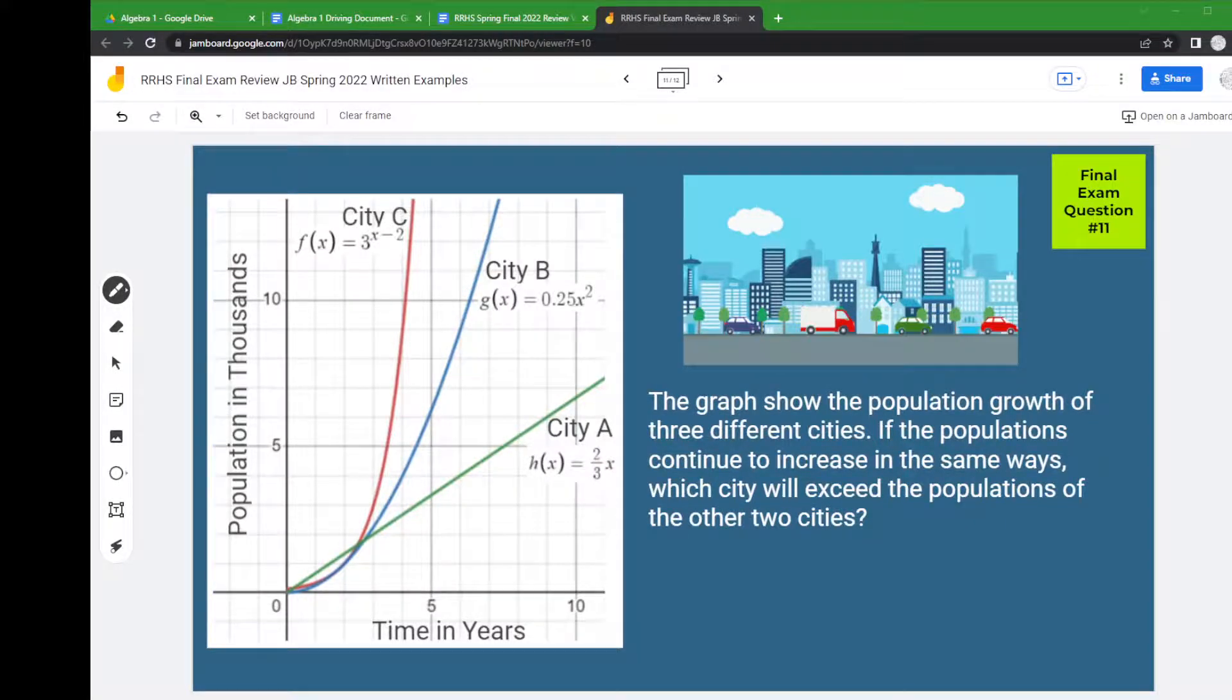In this problem, you're looking at population growth. The graph shows the population growth of three different cities over about ten years. If the populations continue to increase in the same ways, which city will exceed the populations of the other two cities?